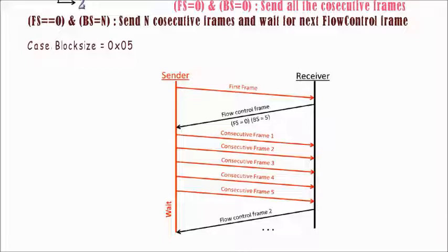This happens when the receiver has some free space in its buffer but not so much as to accommodate complete NSDU. So depending on how much space is present, it computes how many consecutive frames can be taken in and puts that number as block size.